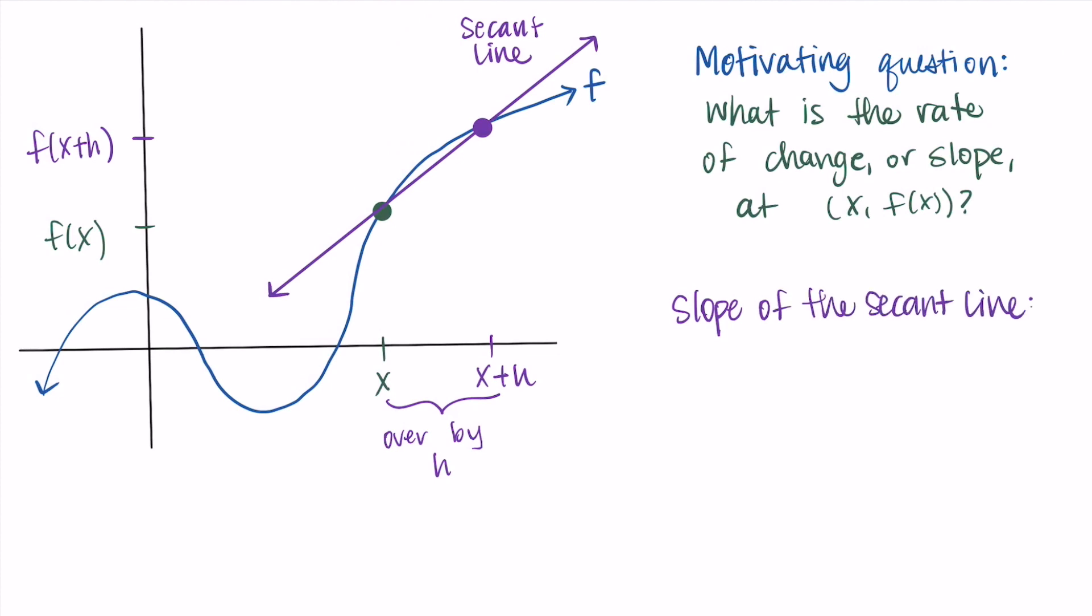So now we have our two points: it's x, f of x and x plus h, f of x plus h. And we can use these to find the slope of the secant line. So we want to find the change in the y, the change in the output divided by the change in the input. So this is f of x plus h minus f of x all divided by x plus h minus x. And then we can simplify the denominator. The x's cancel, that x minus x, so we're just left with divided by h.